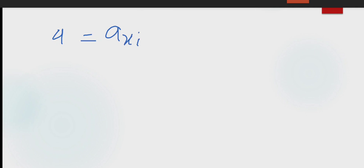Acceleration is a vector quantity. So we will break it into its components: a = Ax·i + Ay·j. To calculate the acceleration, first of all we will calculate its x and y components.